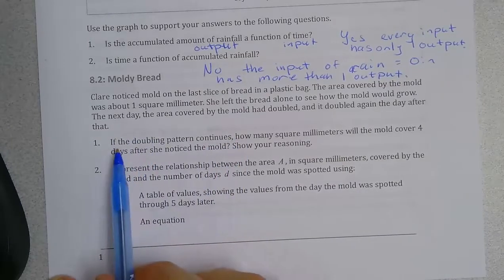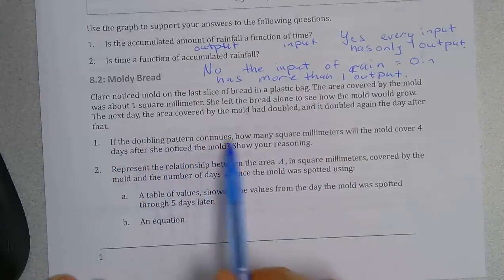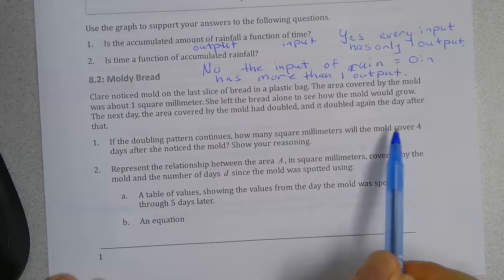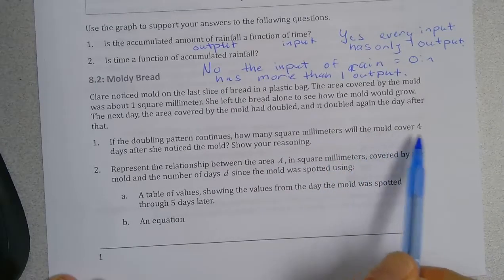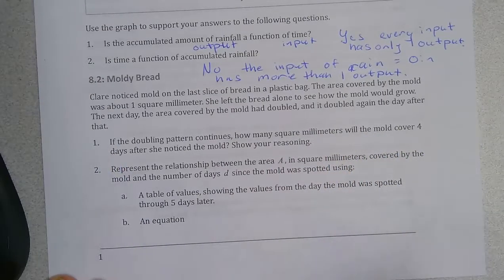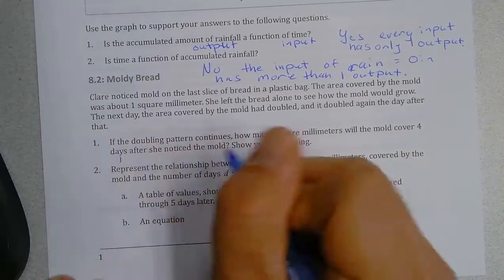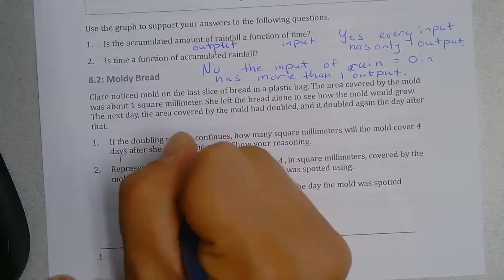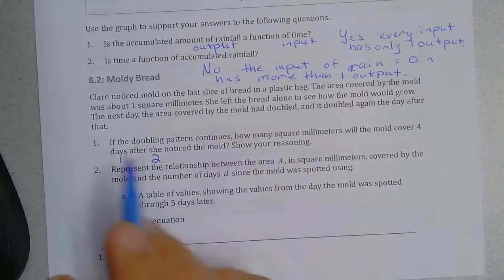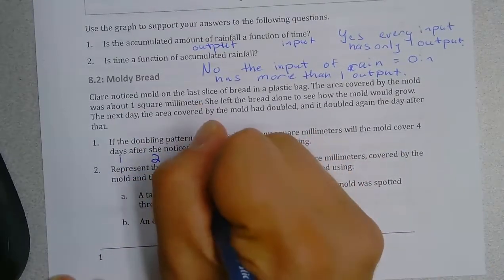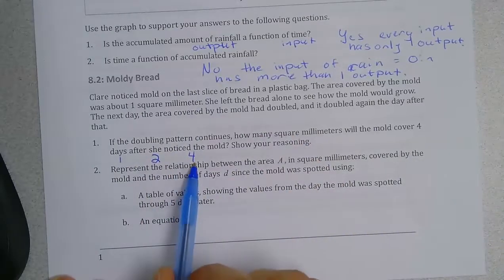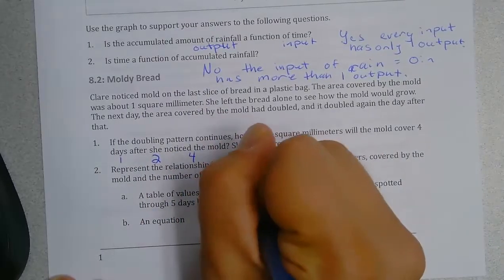So if I'm looking at that, if the doubling pattern continues, how many square millimeters will it cover four days? Well if you remember day one is one. Day two we doubled that so we made two. Day three we doubled that so it would be four. And then day four if you double that will be eight.